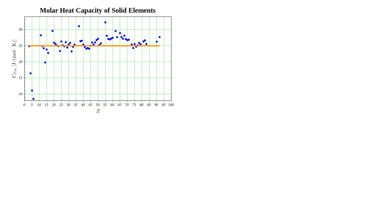So far, we have seen that the molar heat capacities of most room-temperature solids tend to cluster about the Dulong-Petit value, 25 joules per mole kelvin. This is the prediction of classical physics, based on the quadratic degrees of freedom of a solid. However, some values are considerably lower or higher than this.